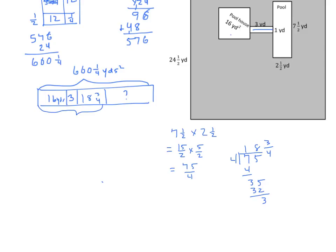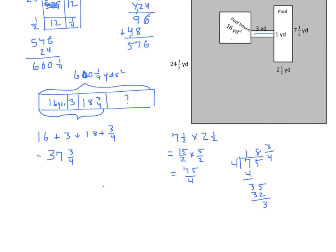I'm going to find the sum of these, then subtract it from my 600 and 1 fourth. 16 plus 3 plus 18 plus 3 fourths. We find the sum of the whole numbers, and we get 37 and 3 fourths.